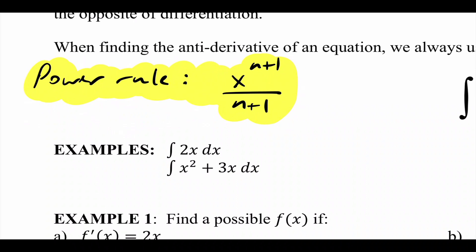Remember with derivatives we move the power to the front — which is kind of like multiplication — and then we subtracted a power. So we did two things: move the power to the front and subtract. Now for anti-derivatives we're doing the opposite: addition and division.